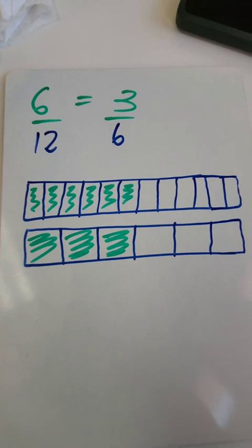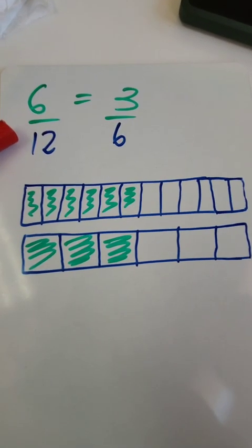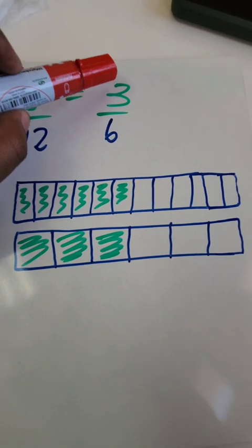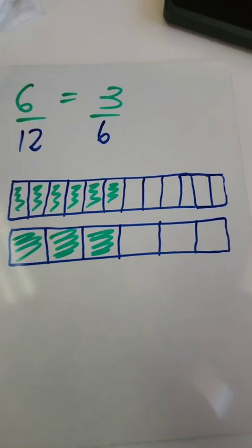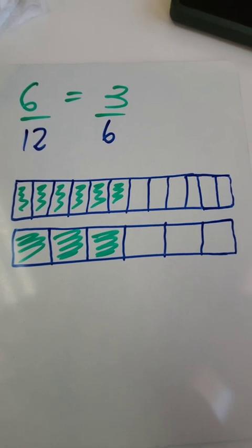So, for example, we said 6 out of 12 is equal to 3 out of 6. And this illustration shows you that that is a fact.